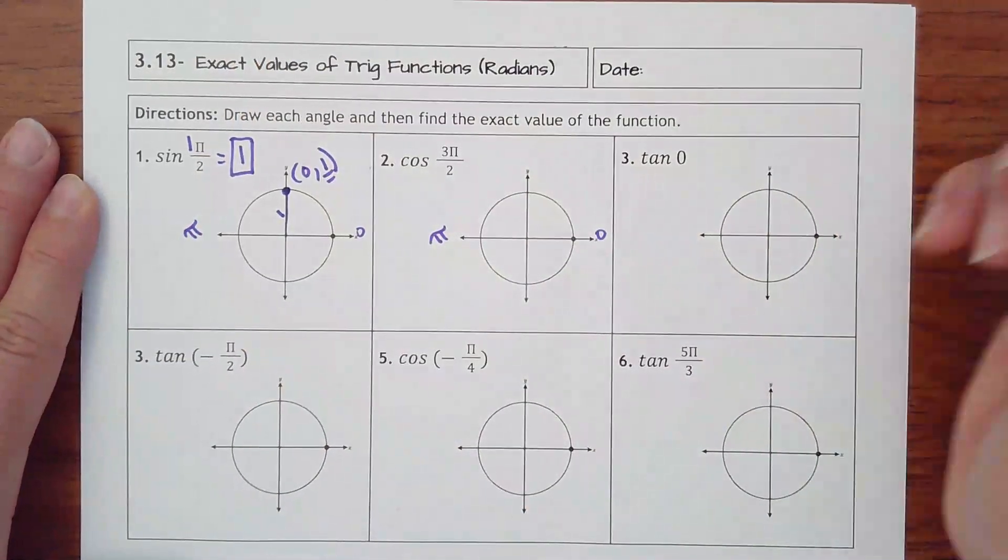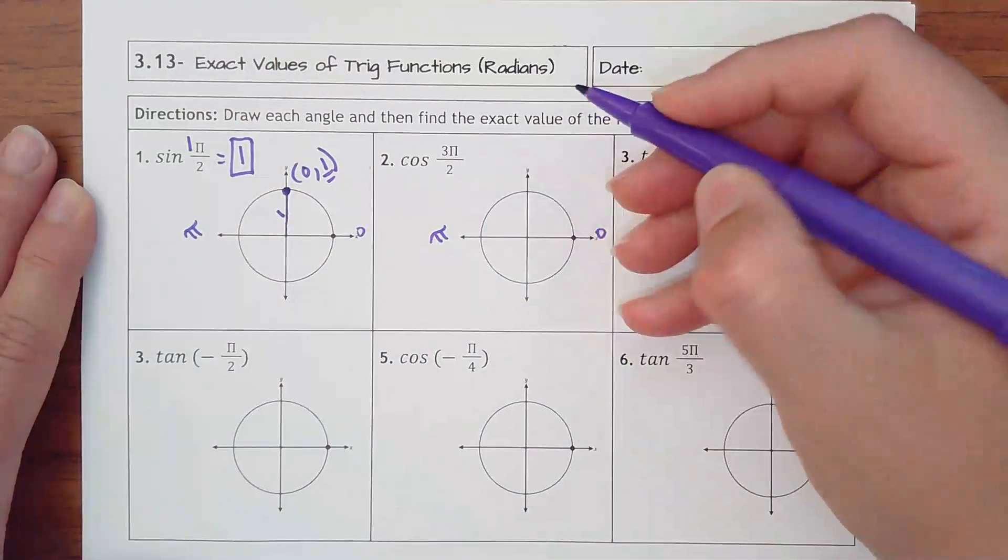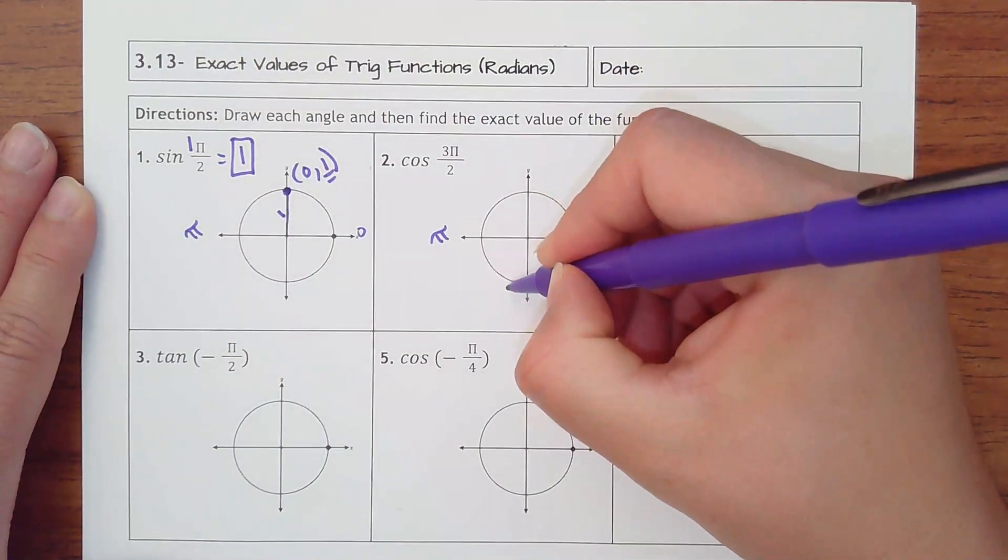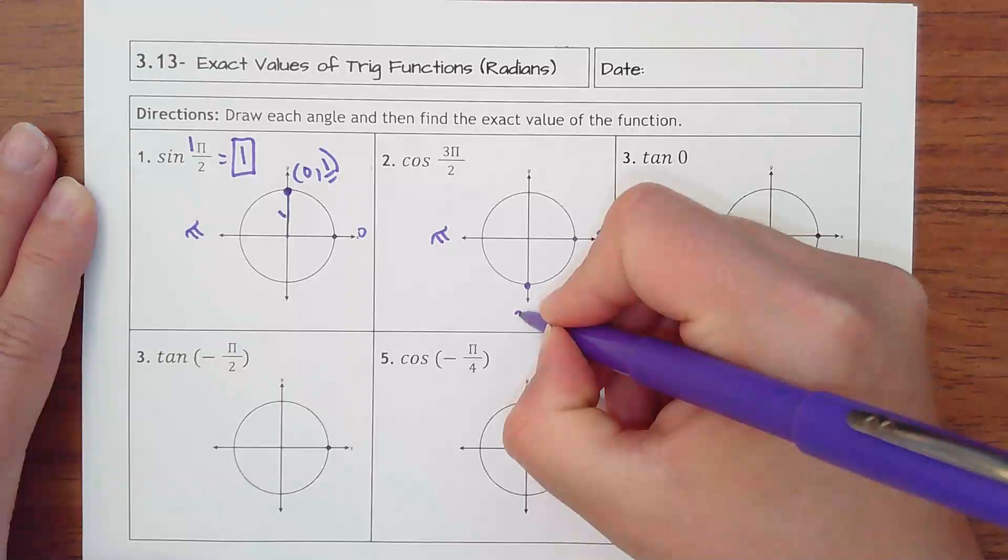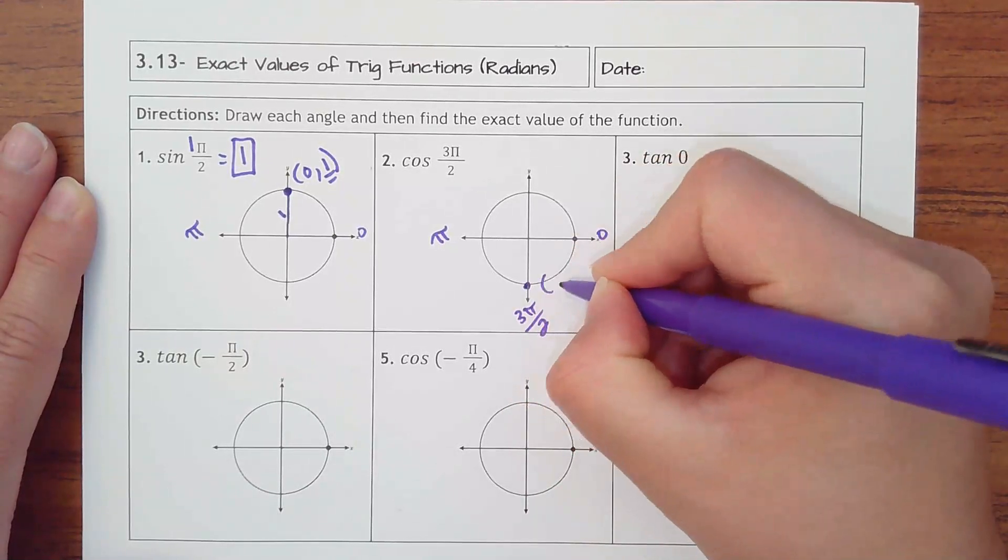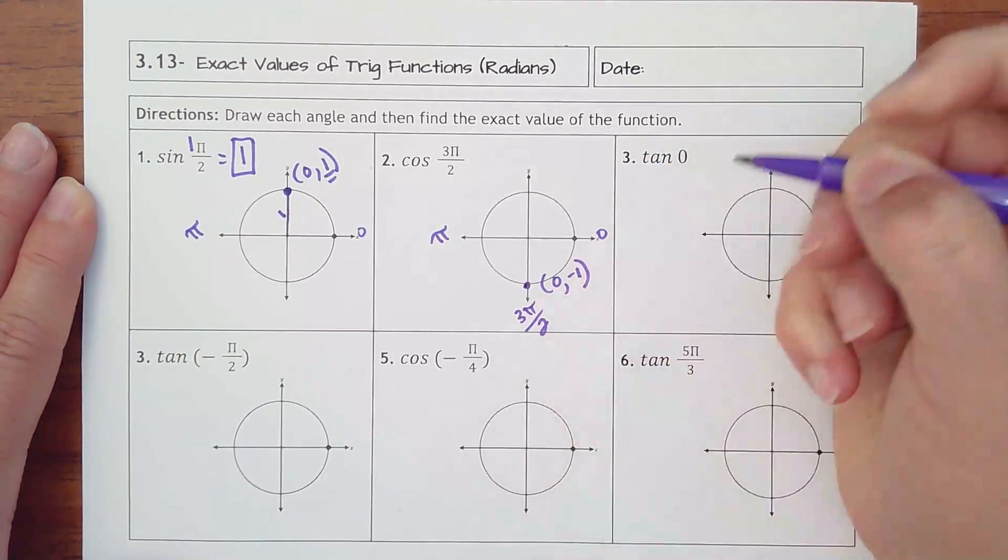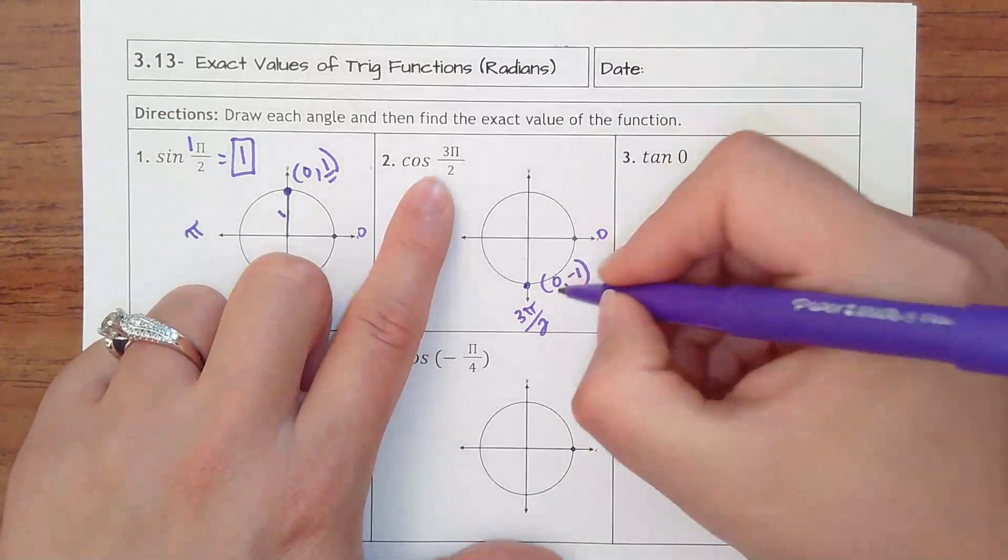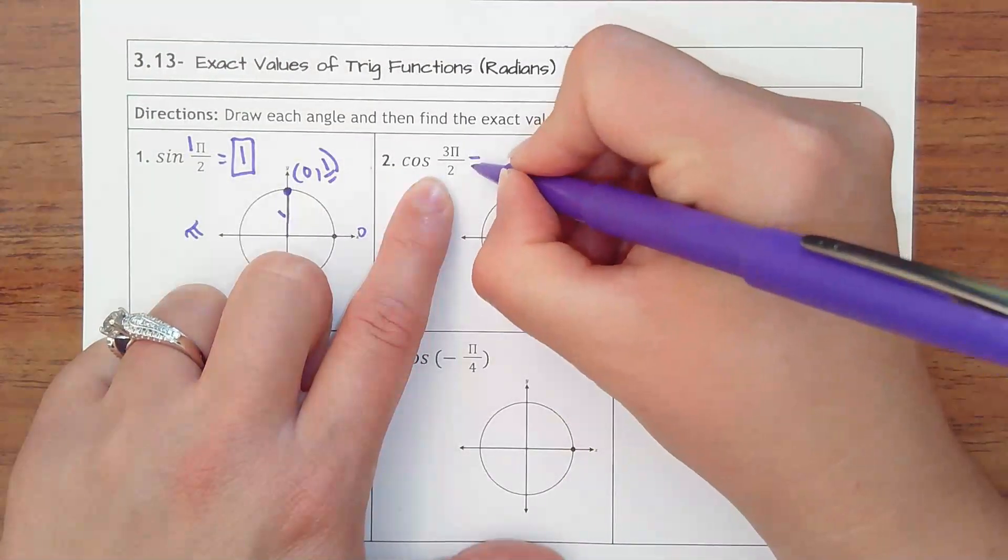Number 2 is cosine of 3 halves of pi. So that's one semicircle and half of another. And so this ordered pair is 0, negative 1. And we want cosine, which is the x value, so that would be 0.